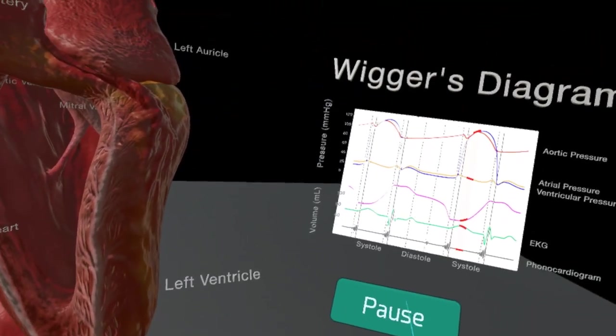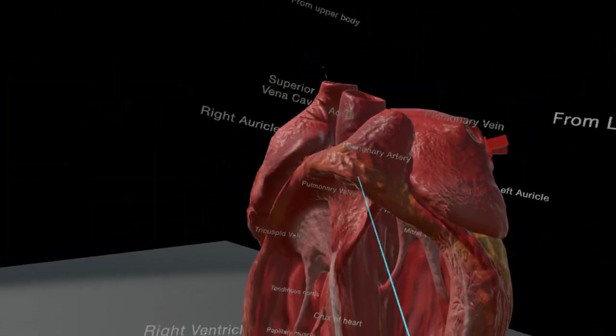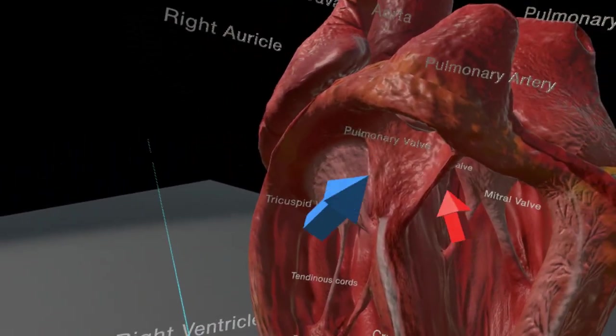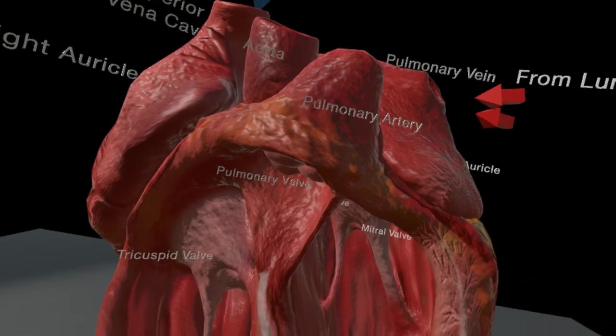These arrows represent the direction of blood flow through the heart. The blue is for the deoxygenated and the red is for the oxygenated blood.